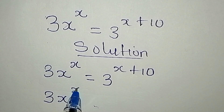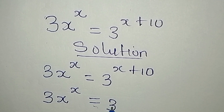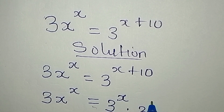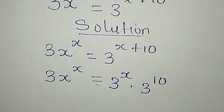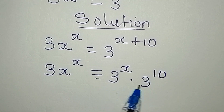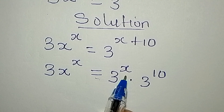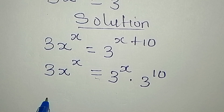So we have 3x to the power of x equals 3 to the power x multiplied by 3 to the power of 10. If we pick one of the bases, we add the powers according to one of the rules of indices.